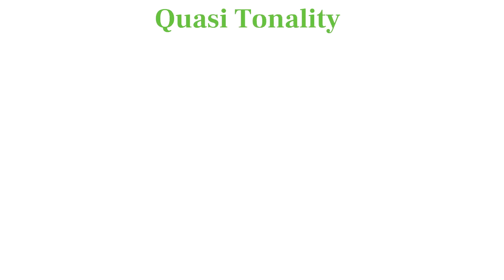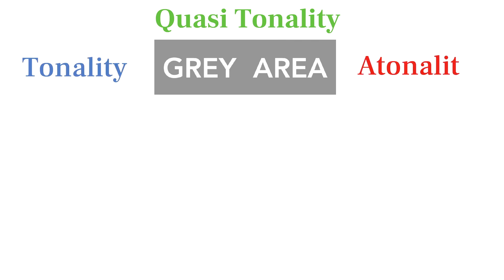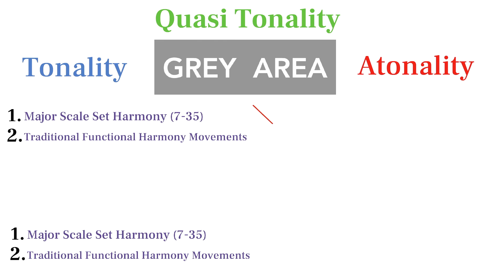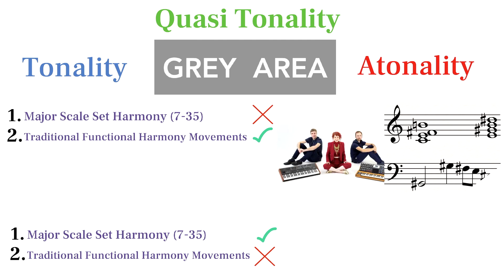I like using the term quasi-tonality to describe the vast amount of music that fits into the gray area between tonality and atonality. Quasi-tonality, as far as I'm concerned, has one criteria of tonality but not the other. For example, a neo-soul band like Moonchild might use a subset of the mystic chord, but use it as a dominant 5 chord resolving up a fourth to the tonic.